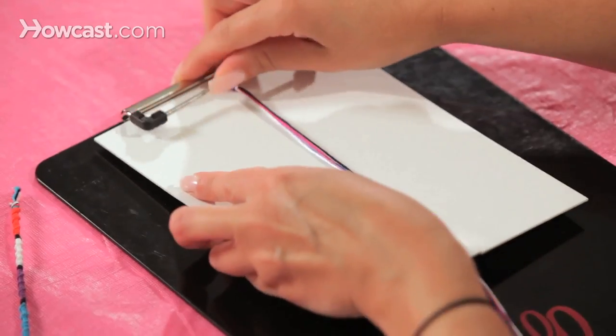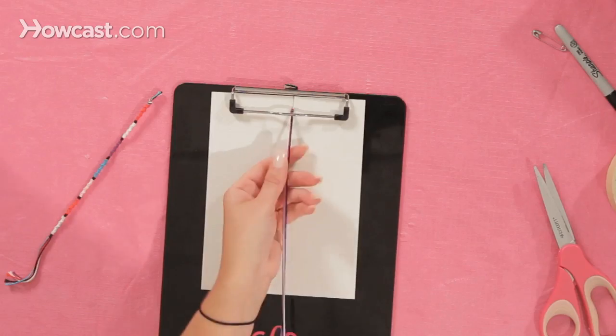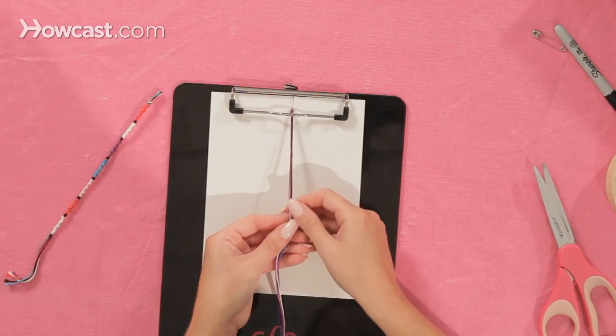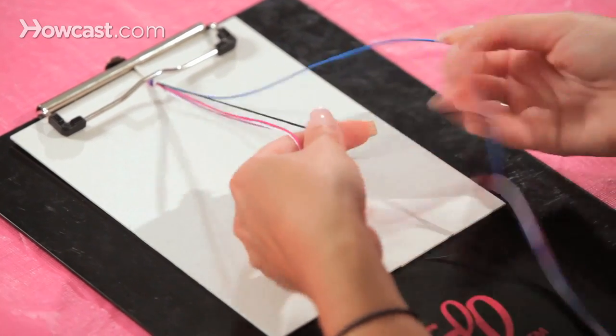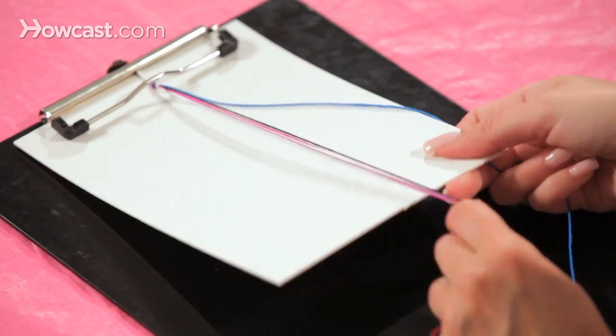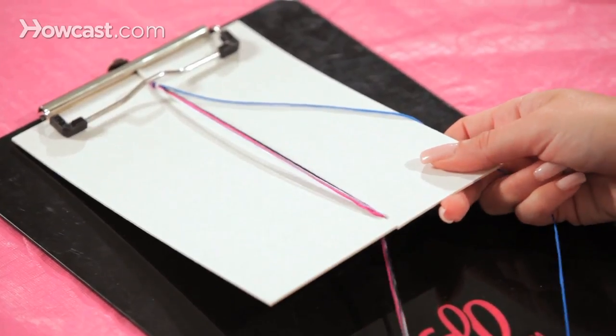Then take your cardboard and place it into your clipboard. Now you're going to pick one color to start with. I'm going to start with blue, and the rest of the colors you're going to secure in the bottom of your clipboard.